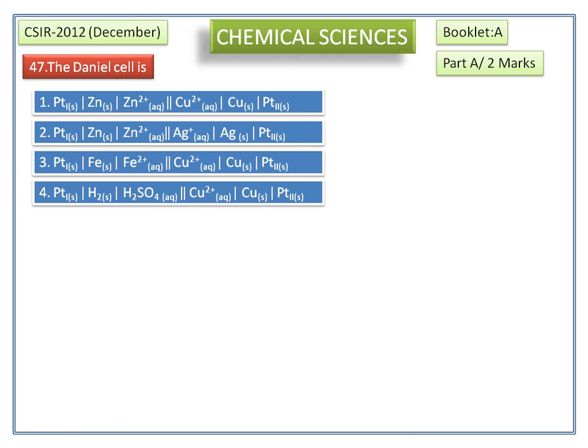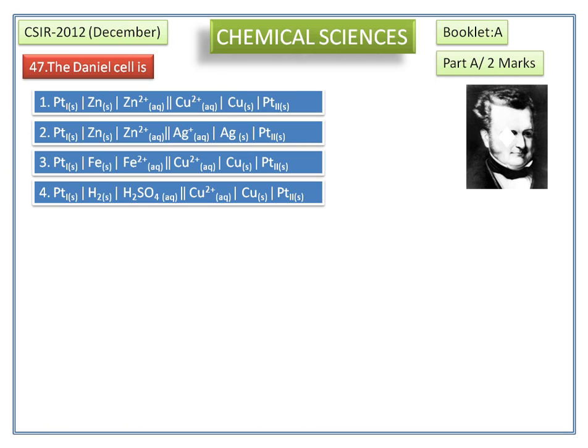The different cell representations are shown here. The Daniell cell is the electrochemical cell invented by John Frederick Daniell in 1836, a British chemist.